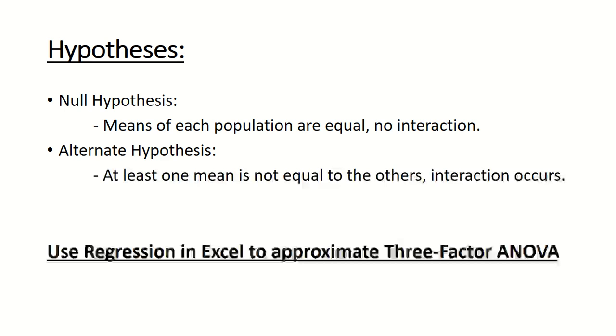We must then create some hypotheses. The null hypothesis states that the means of each factor are the same, meaning there is no interaction. And the alternate hypothesis is that at least one mean is different, which lets us know that there is some kind of interaction taking place.